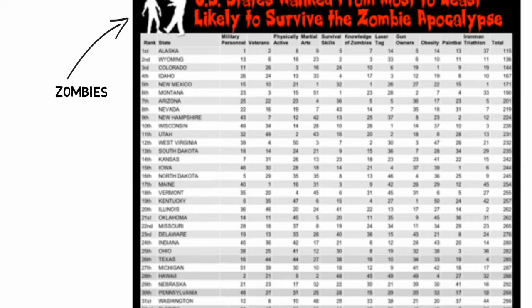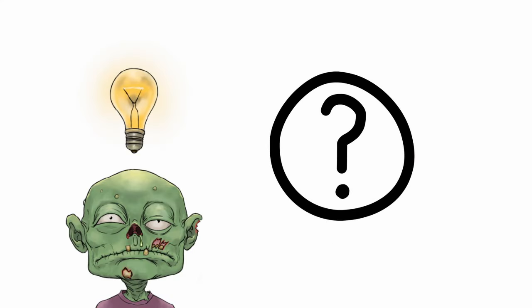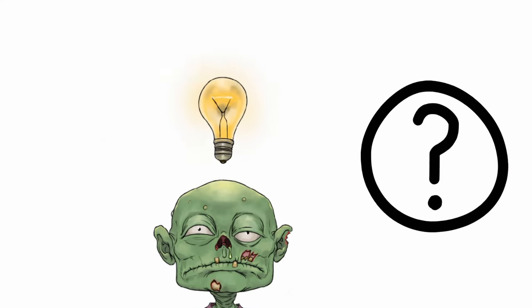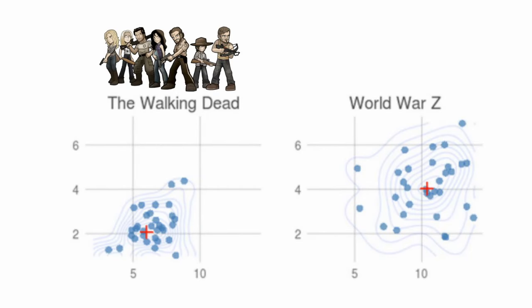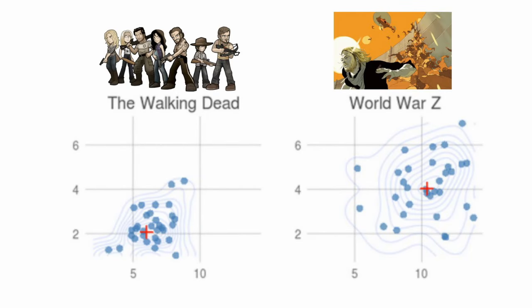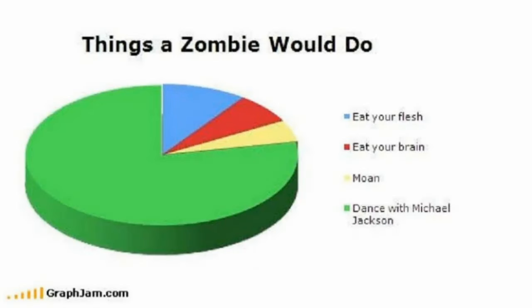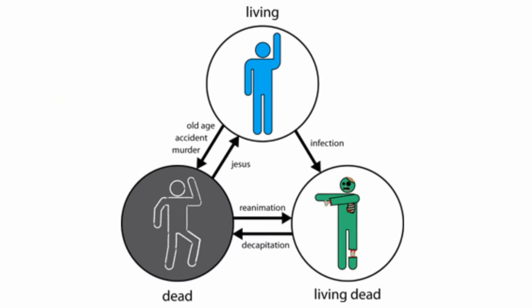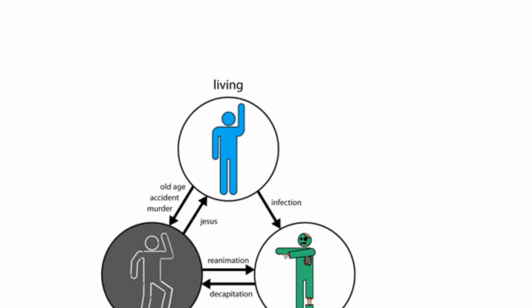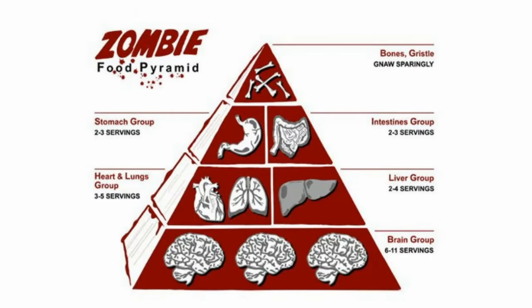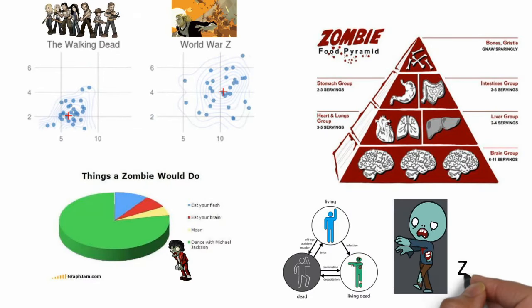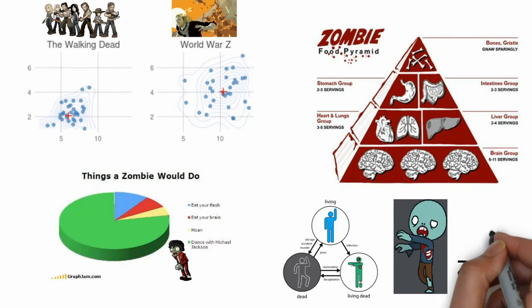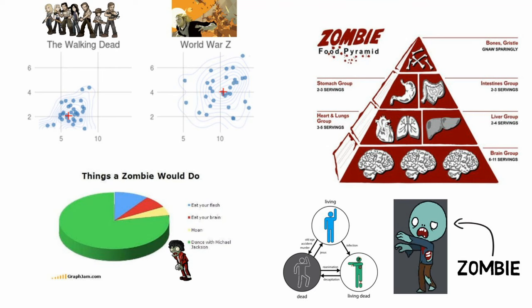Choosing the correct type of graph to display your data can seem difficult because there are many types of graphs to choose from. There can be zombie scatterplot graphs, zombie pie charts, zombie pictograms, and there are even zombie food pyramids. This video's focus is how to determine when to use the two most common types of graph: bar and line graphs.